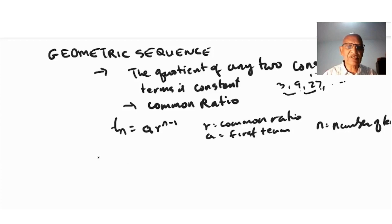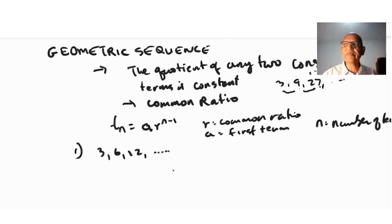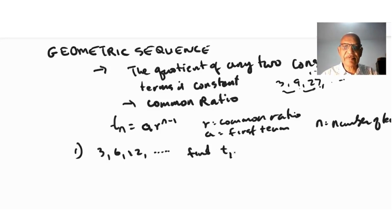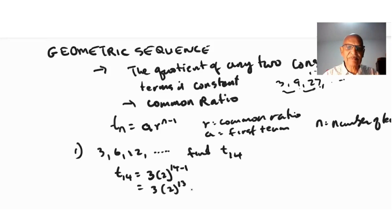Let's look at some examples. Number one: given the sequence 3, 6, 12, and so on, find the 14th term, T14. We apply the formula: T14 = a · r^(n-1). Here a is 3, the common ratio is 6 divided by 3 which is 2, confirmed by 12 divided by 6 also being 2. So r = 2, and n = 14.